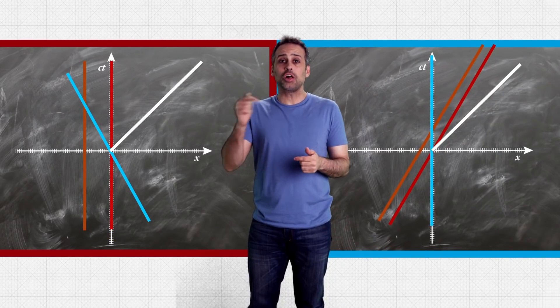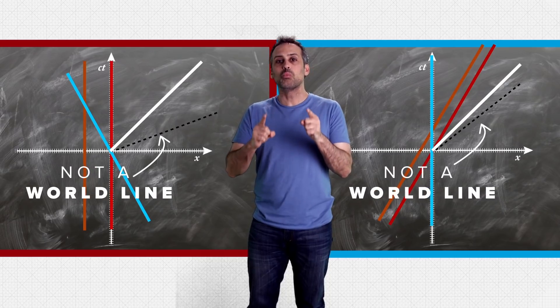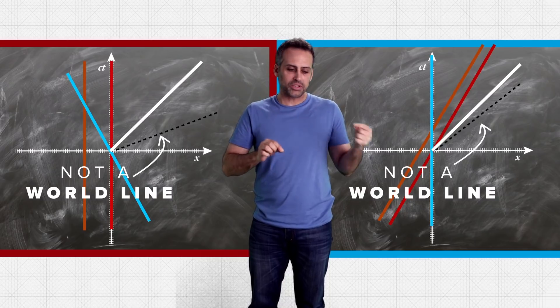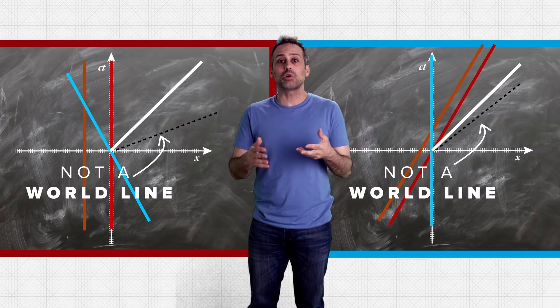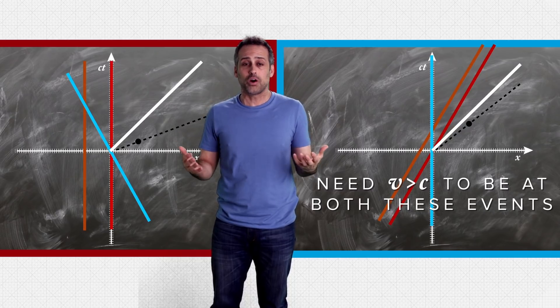Now, on either diagram, I could also have drawn lines that are more horizontal than 45 degrees, but they wouldn't be world lines. Because to be present at two events represented by points on such a line, an observer or a photon would have to be moving faster than light, which normal objects and photons cannot do.